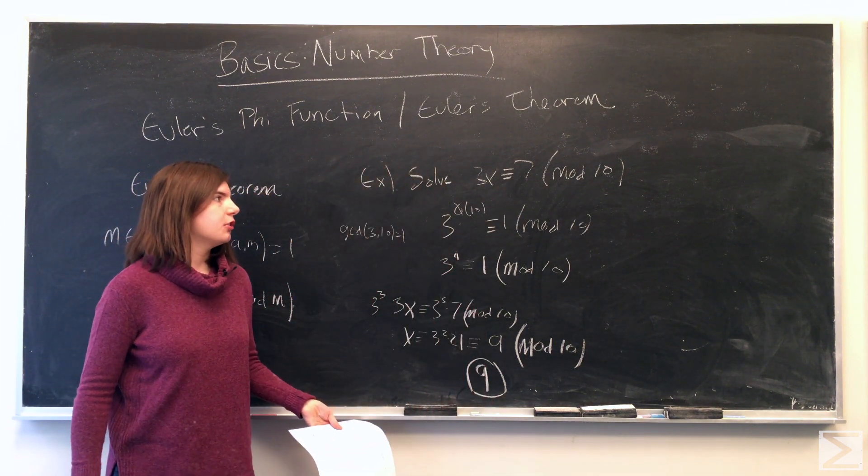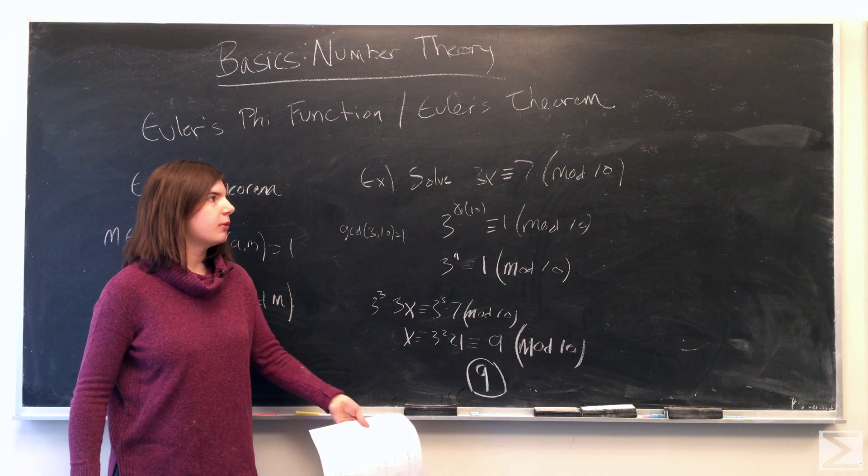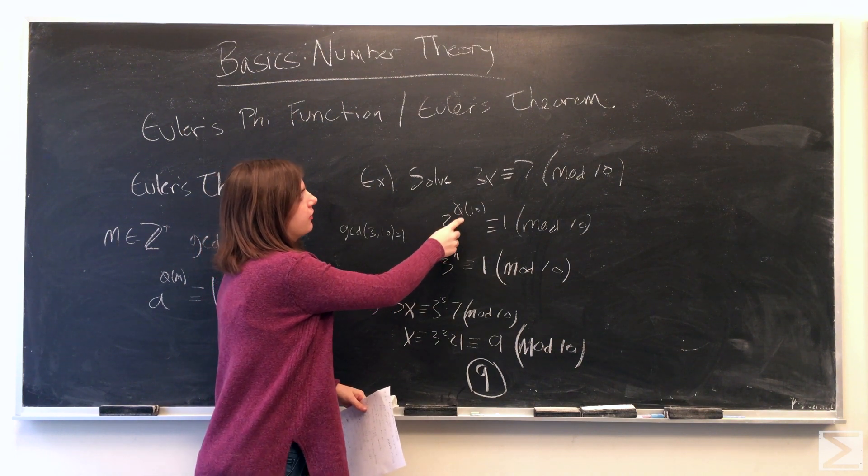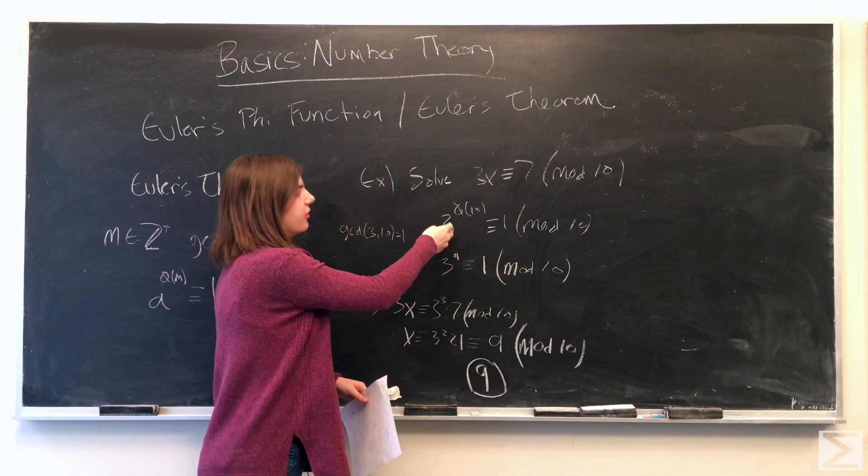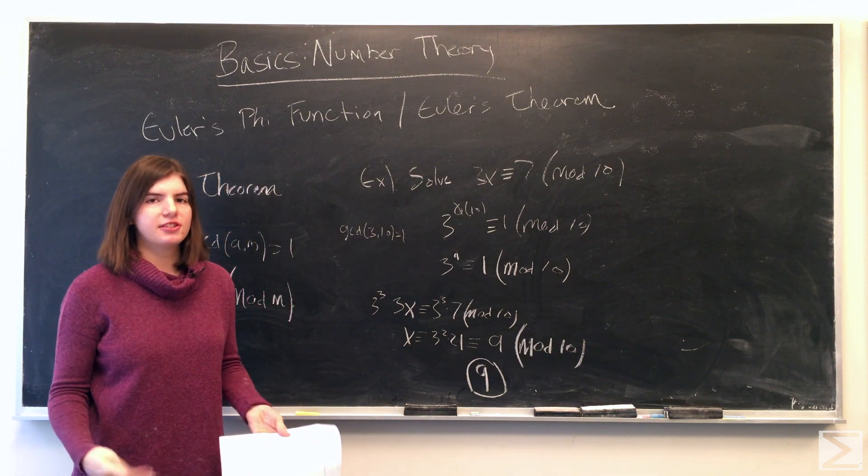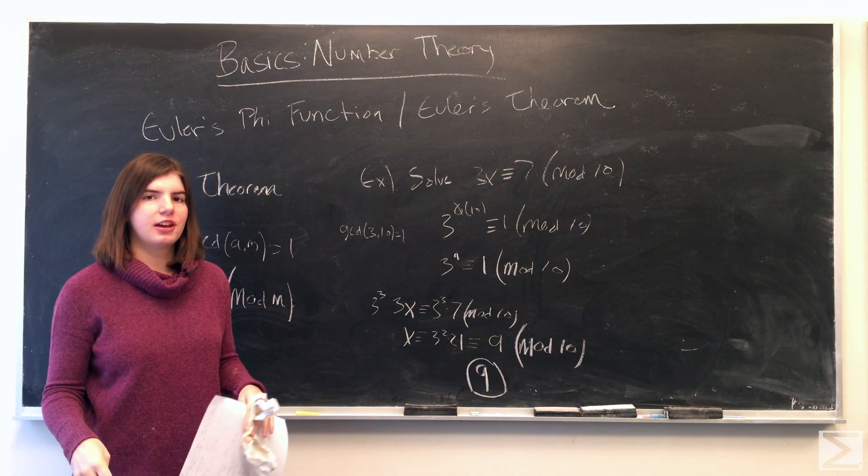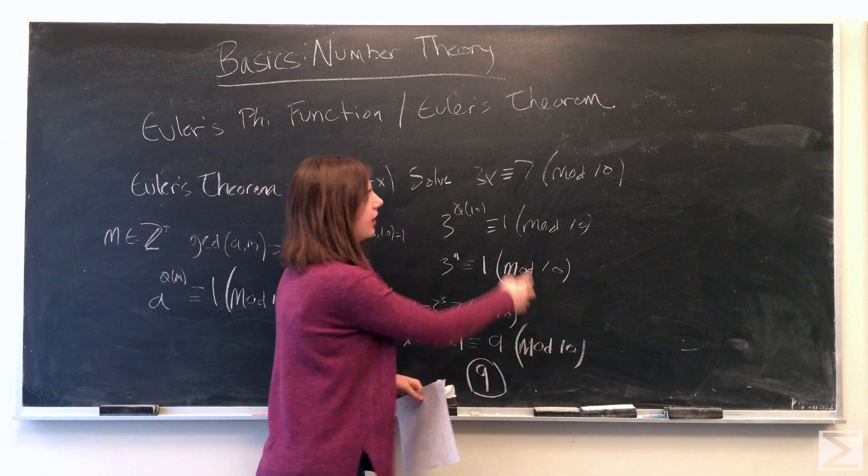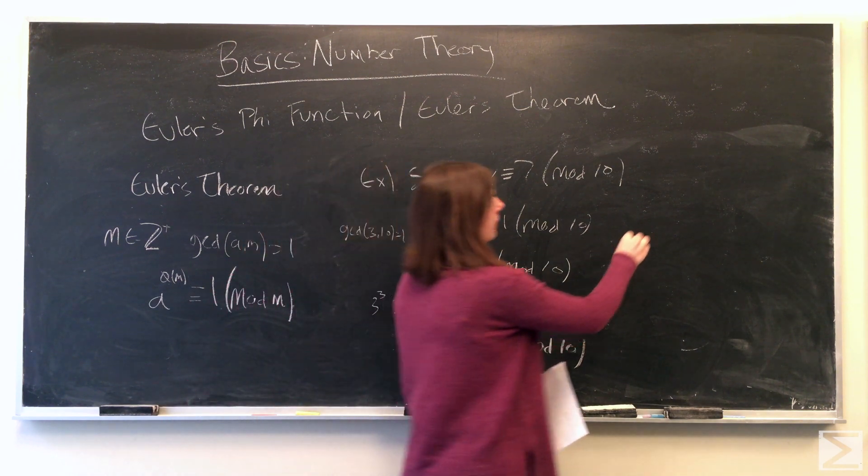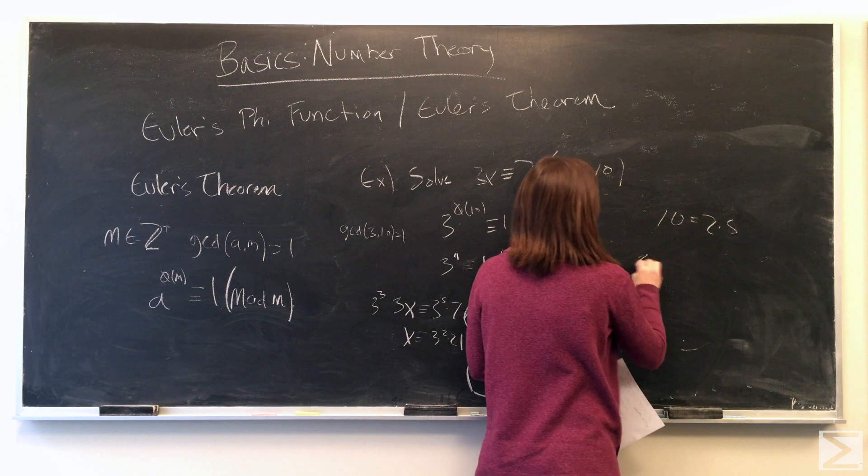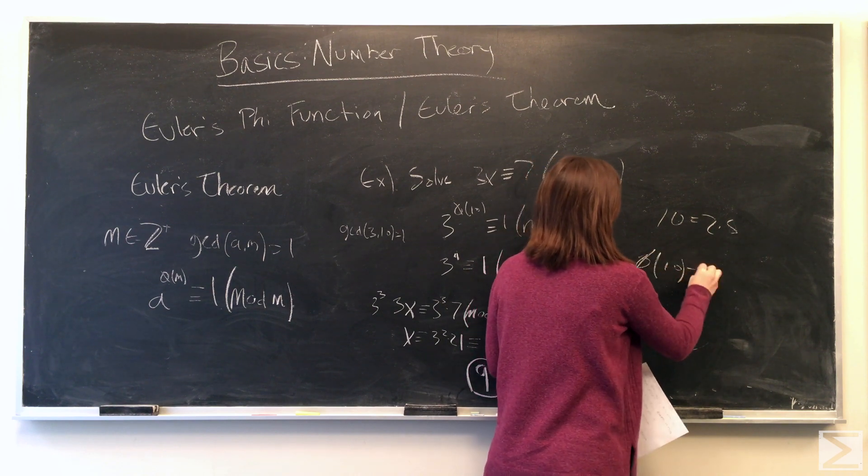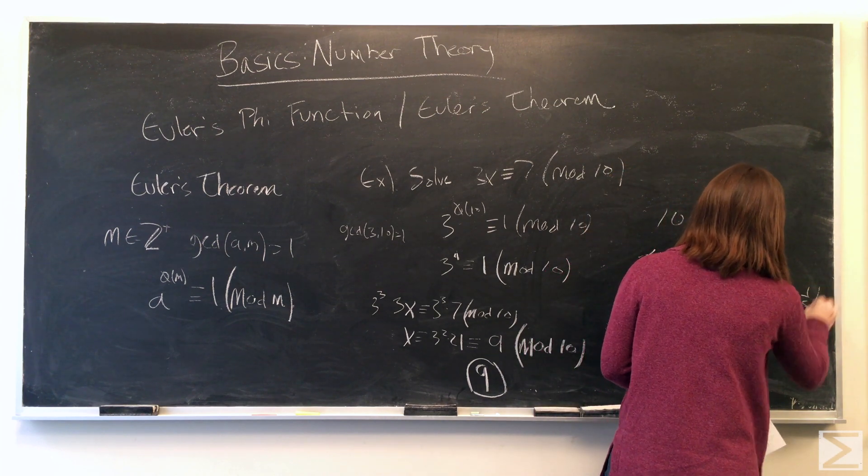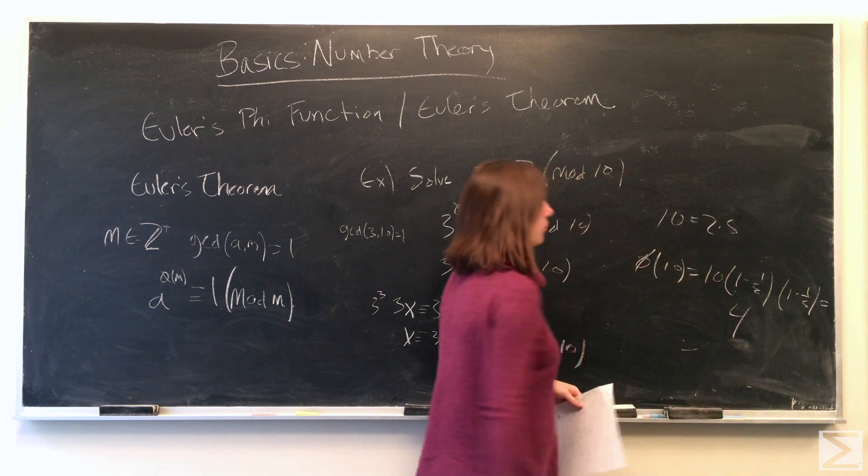If we're asked to solve the linear congruence 3x is congruent to 7 modulo 10, we can use Euler's theorem. Euler's theorem tells us that 3 to the phi of 10 is congruent to 1 modulo 10. To find the phi of 10, 10 is low enough where you can just count the integers that are relatively prime to 10, but if you want to practice with the other methods we discussed, you can break up 10 into its prime factorization, which is just 2 times 5. And then you will get 4.